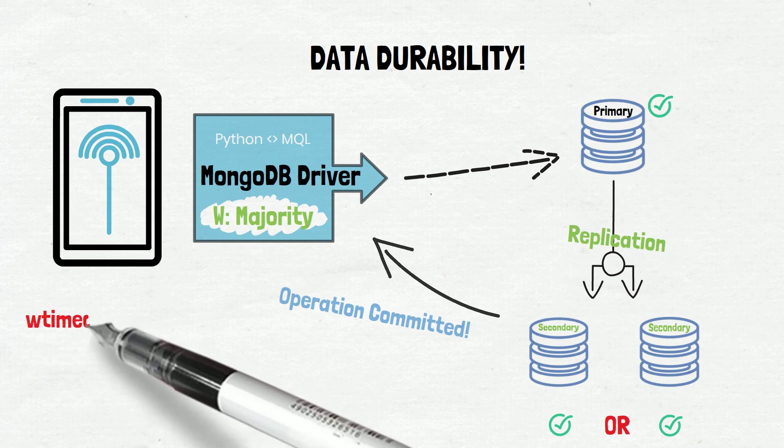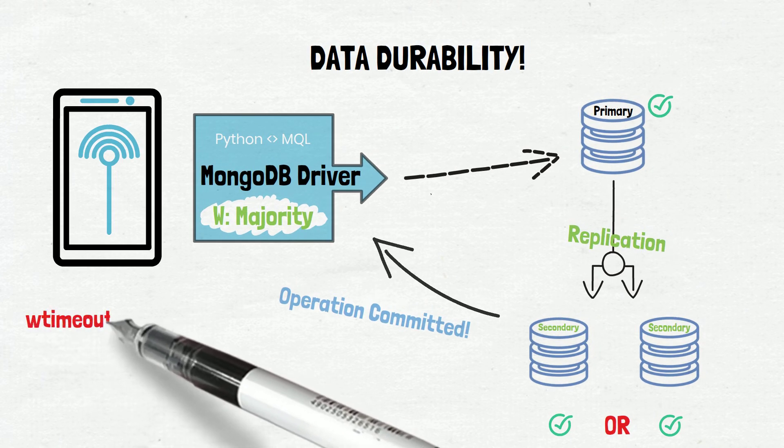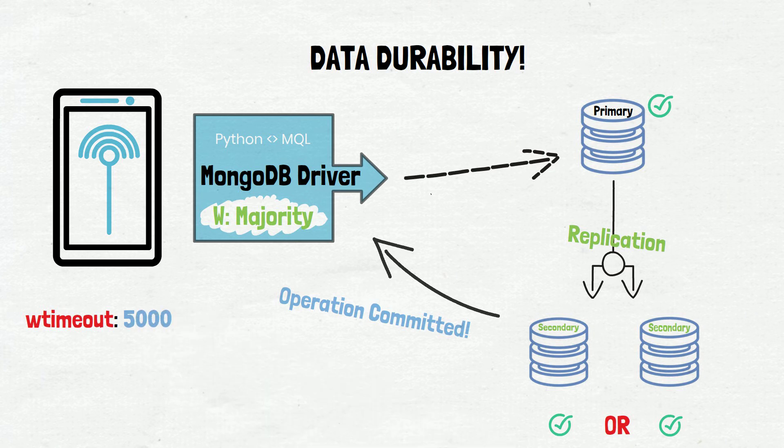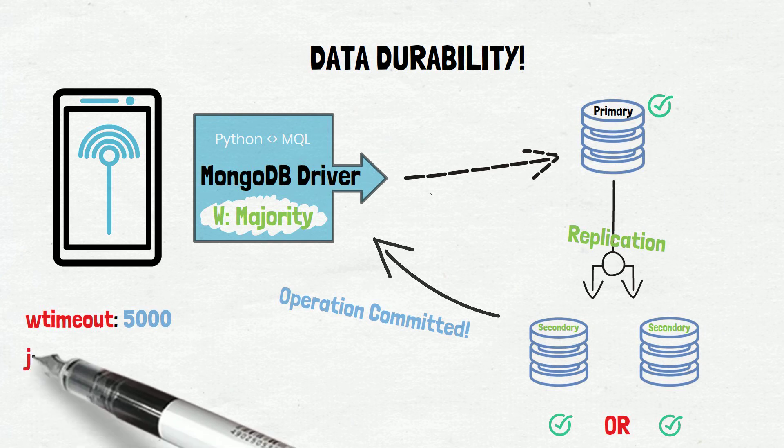In addition to write concerns, we also have a timeout flag that will allow us to specify how long we want to allow an operation to await confirmations before terminating. This is called write timeout, or W timeout. These timeouts are only applicable when we have write concerns of one and above, and are useful when you want to ensure that slow-running operations do not become a bottleneck for your application.